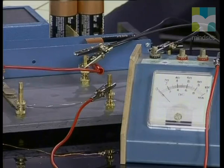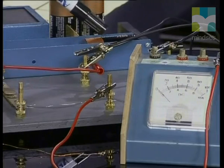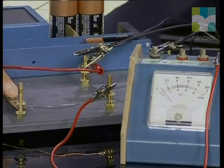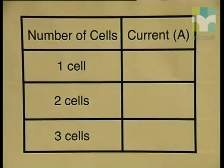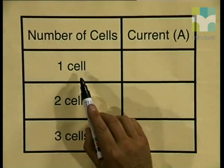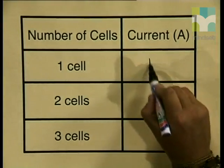But will this relationship always be true? Are there other variables that could influence our results? Let us choose another type of material — this time a length of Nichrome wire. We have to make sure that the length and thickness of the Nichrome wire is the same as that of the copper, otherwise we will not have a fair test. We are now repeating the experiment using the Nichrome wire. With one cell in the circuit, closing the switch, the ammeter is reading about 1 ampere.